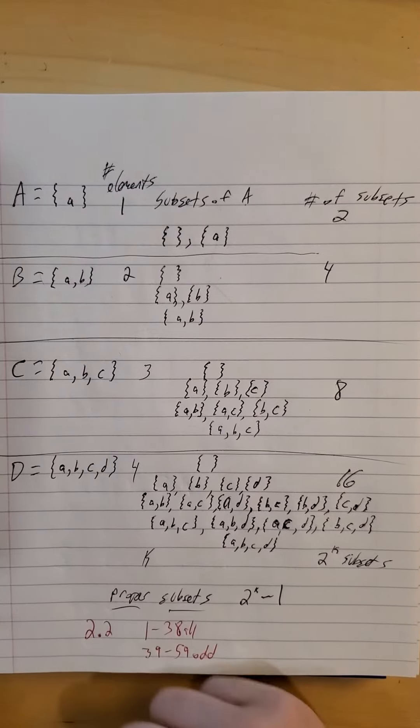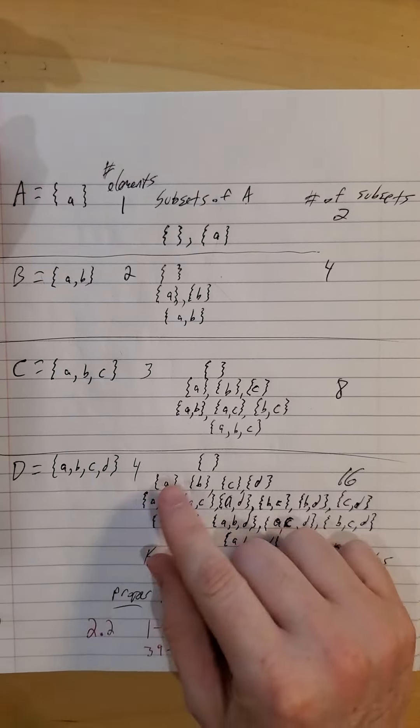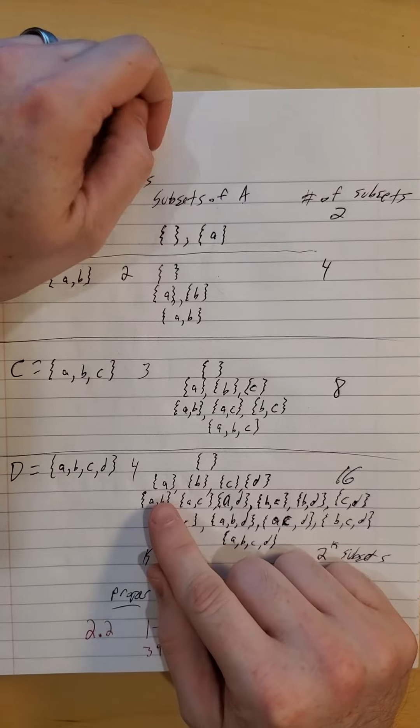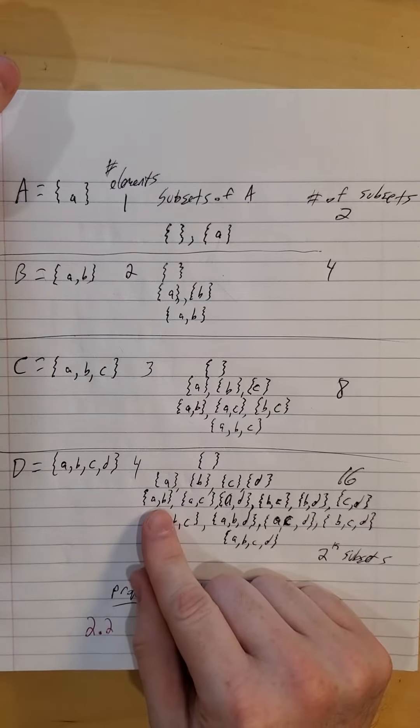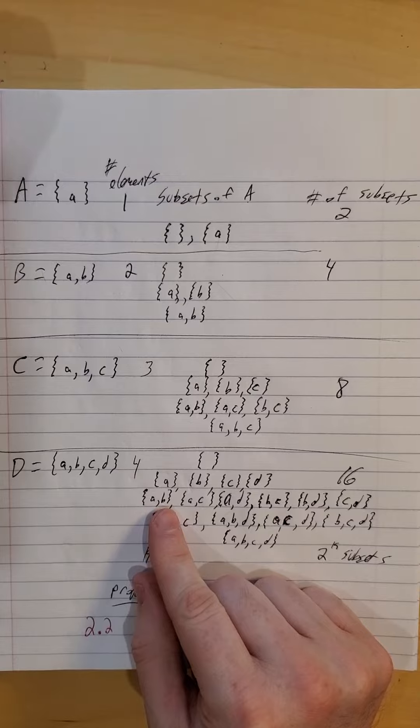Okay, so for set D, we have the empty set, we have four ways to have one at a time: A alone, B alone, C alone, D alone.